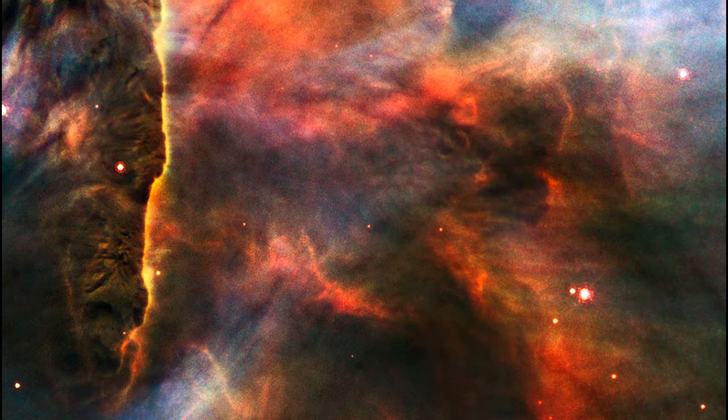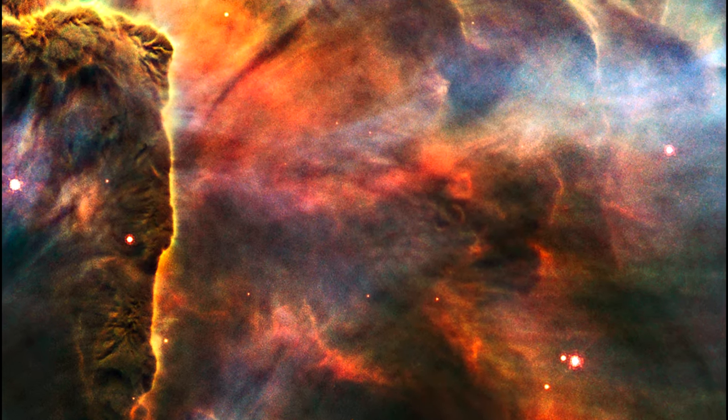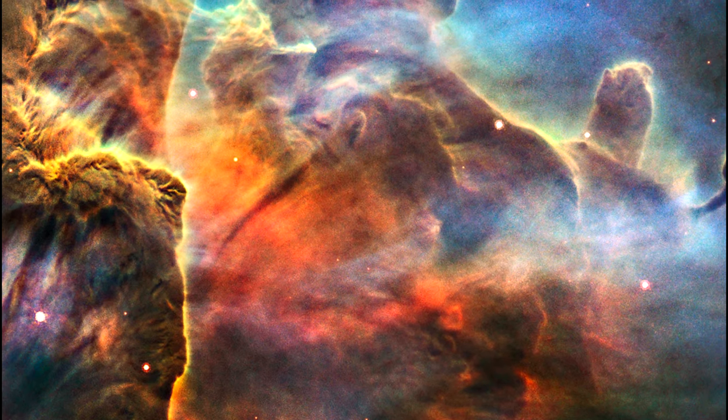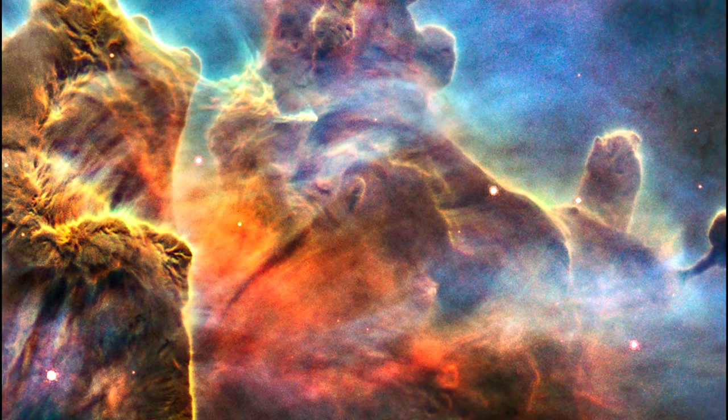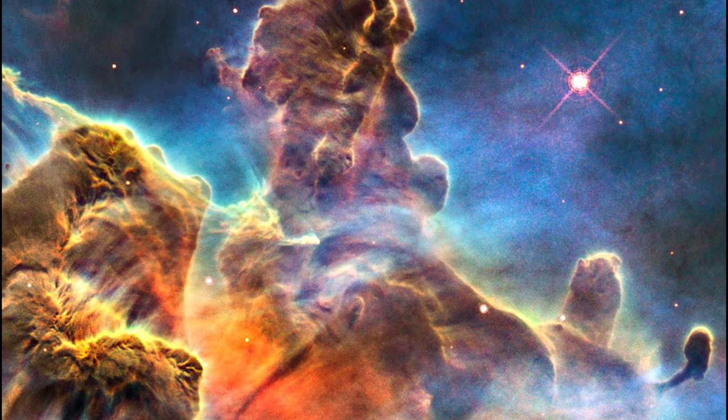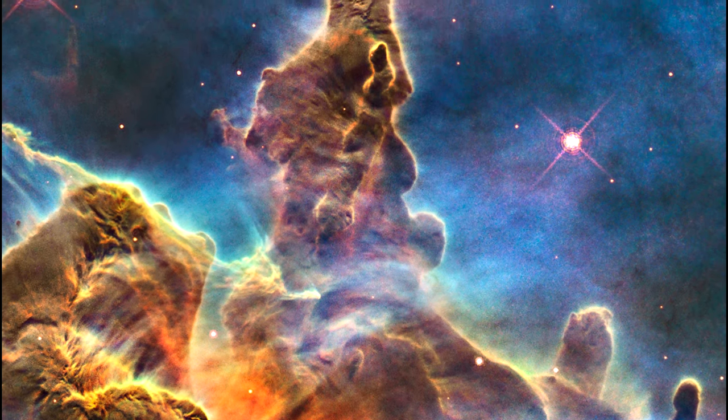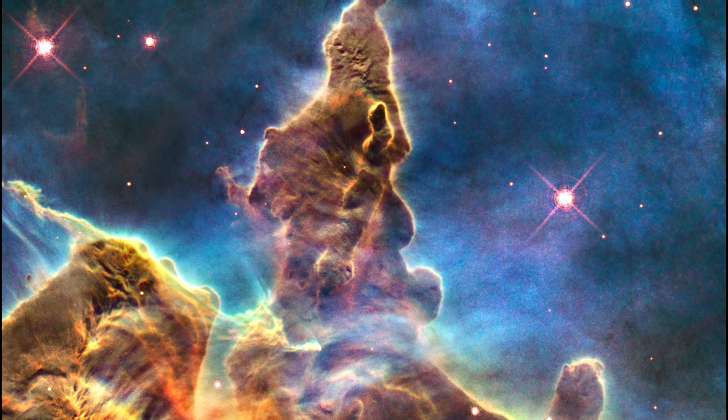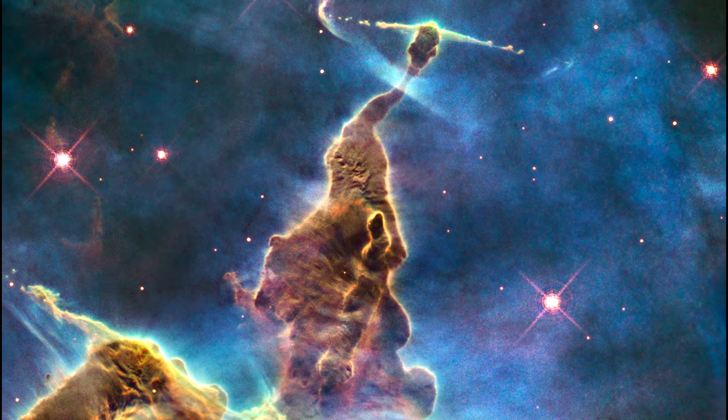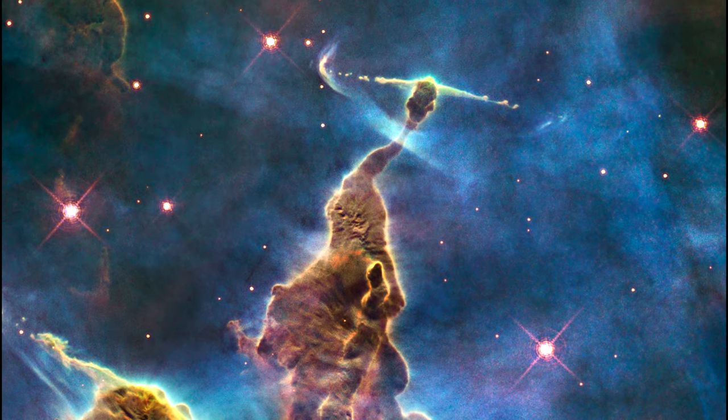A typical characteristic of T-Tauri stars are jets of high-speed gas and dust streaming from both poles as strong magnetic fields guide matter from the star's circumstellar disk into the core. We can see these jets in star birth nebulae. Here's a striking example from the Carina Nebula. You can see the jets at the top of this mystic mountain.